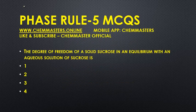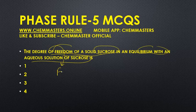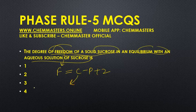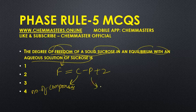Now look at the first question: the degree of freedom of solid sucrose in equilibrium with an aqueous solution of sucrose. We need to find the degree of freedom, indicated as F. We have the equation F = C - P + 2, where C indicates the number of components — that is, the number of independent chemical species present in the given system — and P indicates the number of phases in the system.